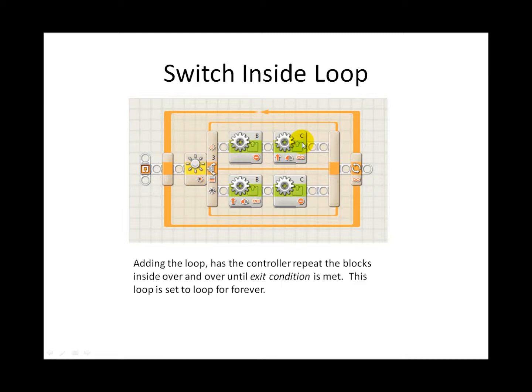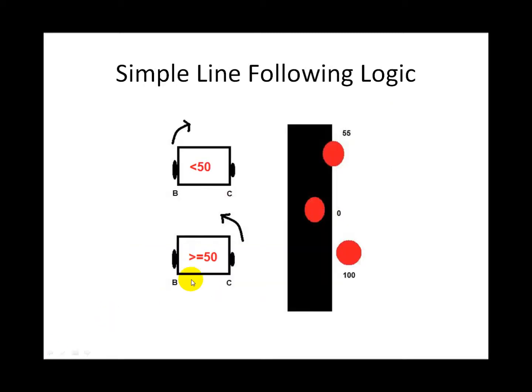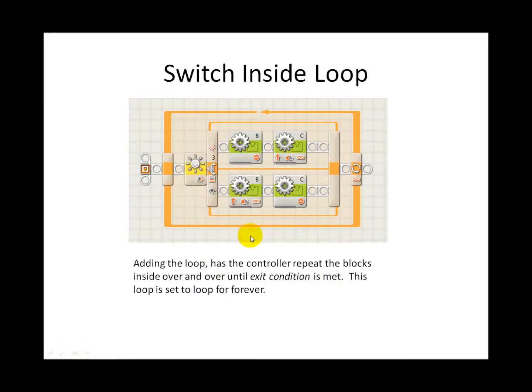If that is true, it does the top line, which means it turns B off, C keeps going. That has it turn towards B. This path was chosen, so it comes out.